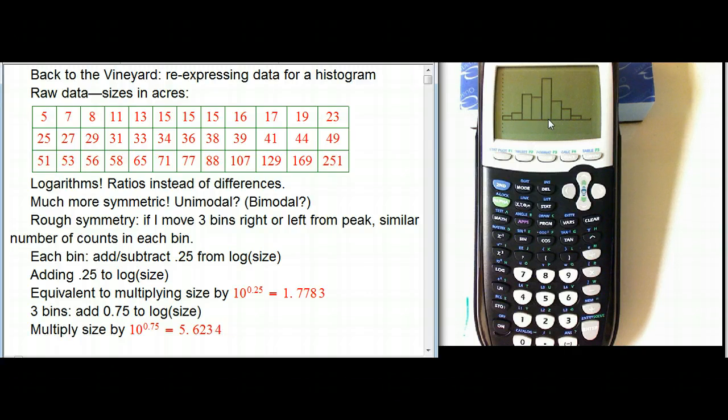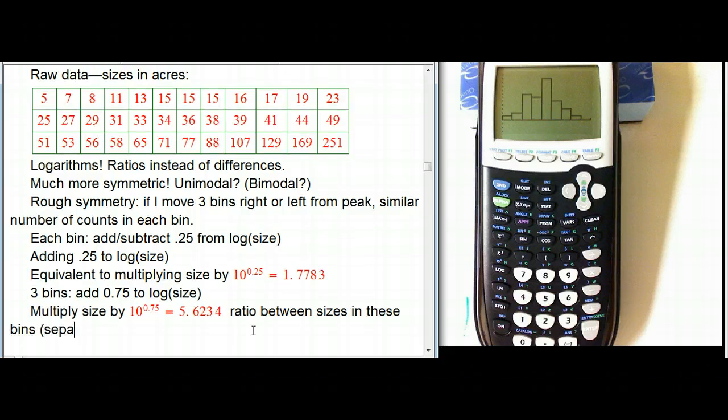So these bins here, this one here, is about sort of a middle size average vineyard, and if I go three bins to the right, I'm looking at vineyards that are five times as big. Or if I go to the left, I'm looking at vineyards that are five times as small. So it's in terms about, it's about the ratio. So this is the ratio between the sizes in these bins separated by three bins.